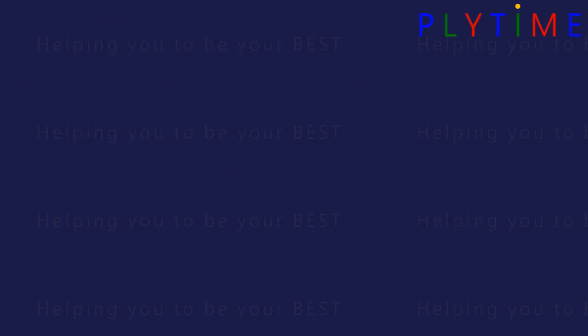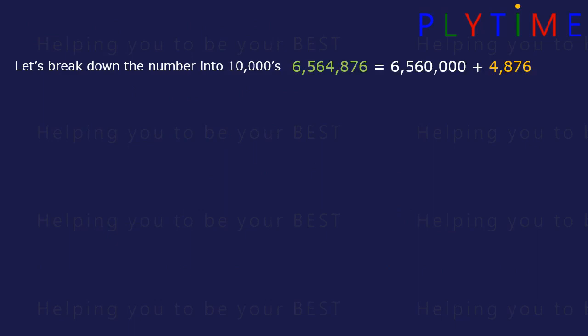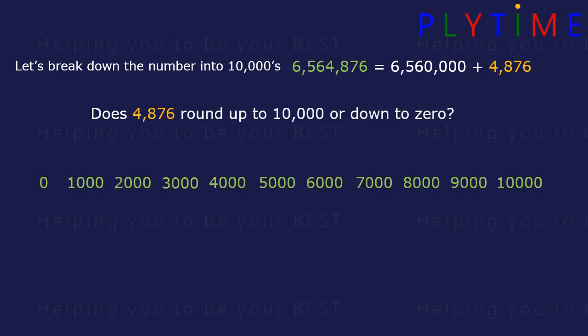We can break the number down into 10,000s. It's the same as 6,560,000 plus 4,876. Now does 4,876 round up to 10,000 or down to zero? On our number line it's closer to zero so it rounds down to zero.